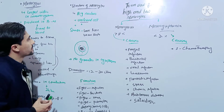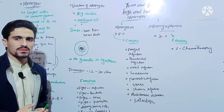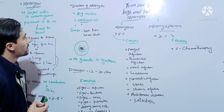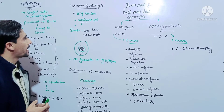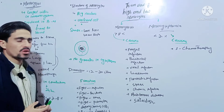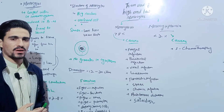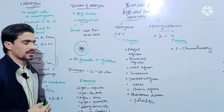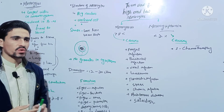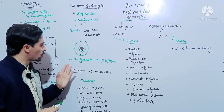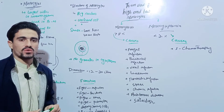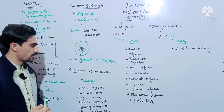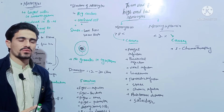Now let's discuss the structure of monocytes — how the structure of a monocyte looks. Monocytes have a big nucleus, and the monocyte is a uni-lobed cell; they have only one lobe. Monocytes look like a bean shape, and there are no granules in the cytoplasm of monocytes.